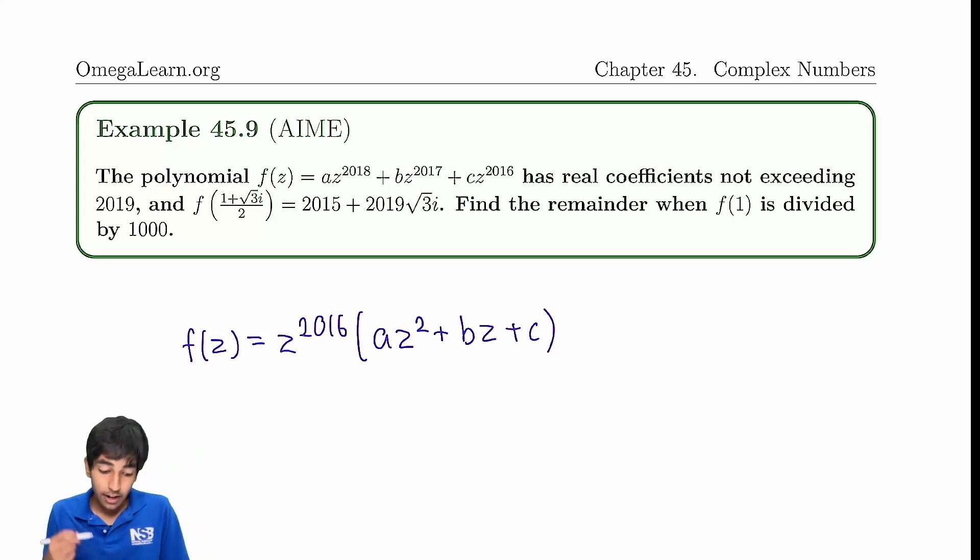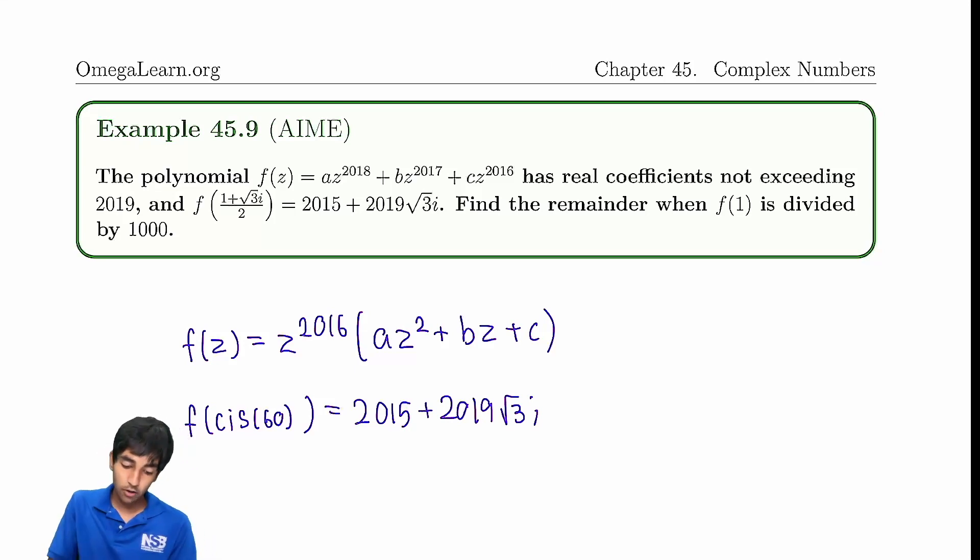Coefficients that do not exceed 2019. F of this. Now this should also remind you of something. What is that? It's cis of 60. F of cis 60, right? Because cosine 60 is one half, and sine 60 is root 3 over 2. It's equal to this. Basically, we're asking you to find f of 1. And notice that in f of 1, it's just 1 to the 2016 times a plus b plus c.